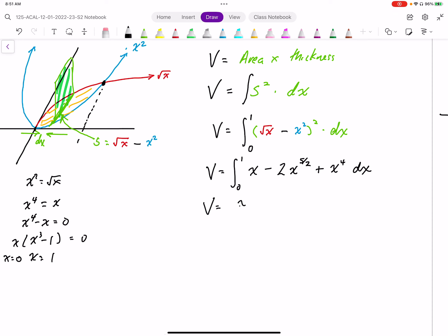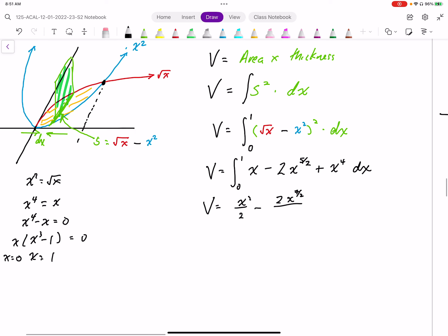Evaluating this integral, I get x squared over 2 minus 2x to the 7 over 2 divided by 7 over 2. So 2x to the power 5 over 2 plus x to the power 5 over 5, integrating that from 0 to 1. So I'm just going to clean this up a bit. x squared over 2 minus this works out to be 4x to the 7 over 2 over 7 and then plus x to the fifth over 5.